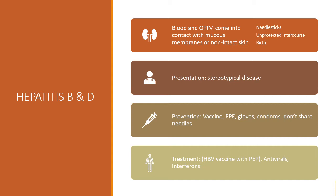Anytime there's direct contact with open wounds or blood with non-intact skin or mucous membranes, the presentation is that really classic stereotypical disease. For prevention, there is a hepatitis B vaccine — it's a series of three vaccines — and there is a titer to test whether you've developed antibodies. PPE is huge, so gloves and condoms are very important in preventing the spread of hepatitis B. Don't share needles and try to avoid accidental needle sticks. For treatment, if somebody has exposure, we have a post-exposure plan, and the hepatitis B vaccine would be given if they hadn't already been vaccinated. Antivirals and interferons also can be effective at treating hepatitis B.